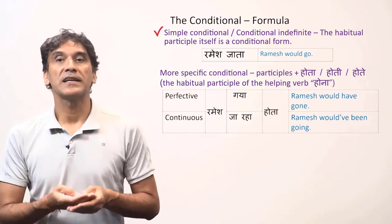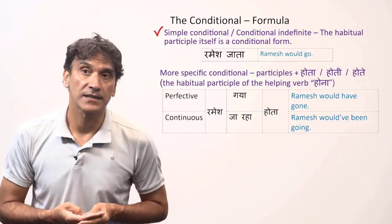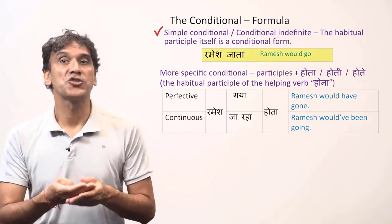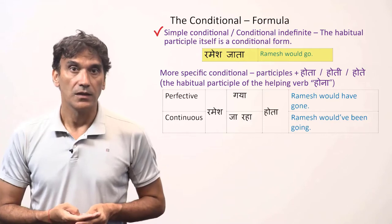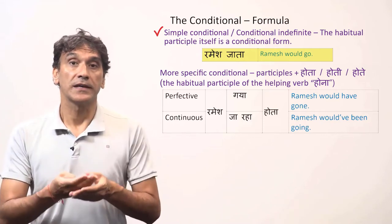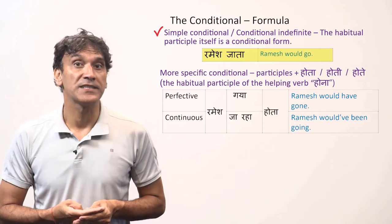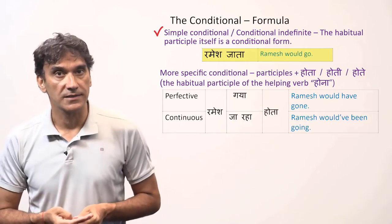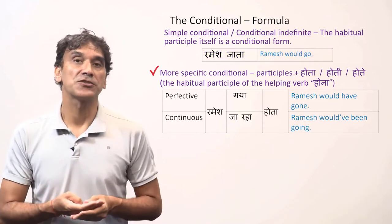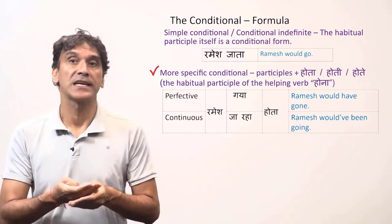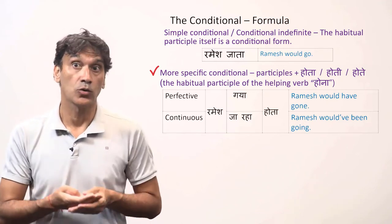For the simple conditional, the habitual participle itself is the conditional sentence. So 'Ramesh jata' means 'Ramesh would go,' and it serves for both clauses — the if clause and the then clause. The habitual participle is used to form conditional sentences. To form more specific conditionals, you use the participle plus the habitual participle of the verb hona — that is, hota, hoti, hote.